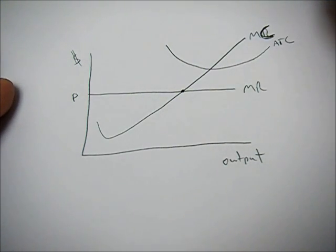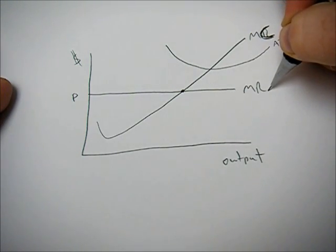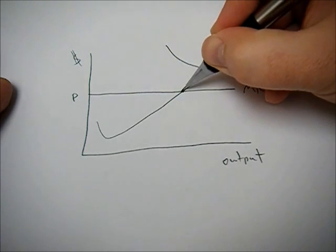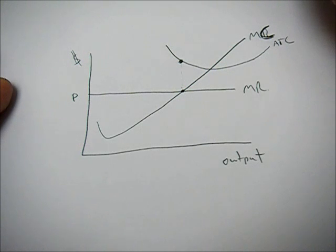But now when we're calculating economic profit or economic loss, we take the difference between our marginal revenue line, since it's flat, and our average total cost curve.